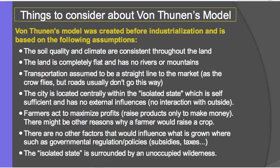He based these assumptions on the time that he was living in. He said that, considering the two costs that determine where you would locate agricultural production — the cost of the land and the cost of transportation — he assumed that all the soil is the same quality and all the climate is consistent throughout the entire land area he was talking about.